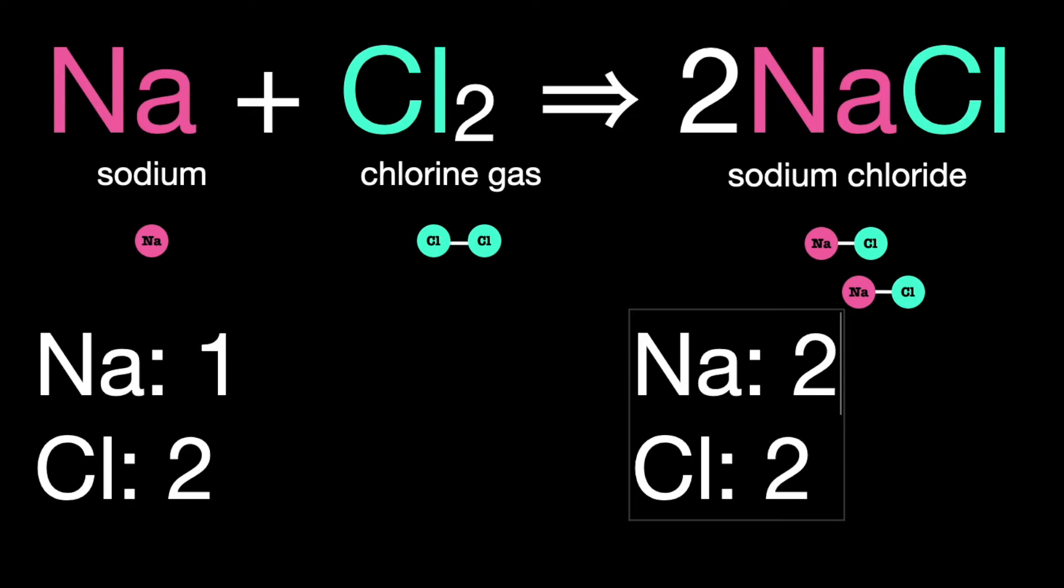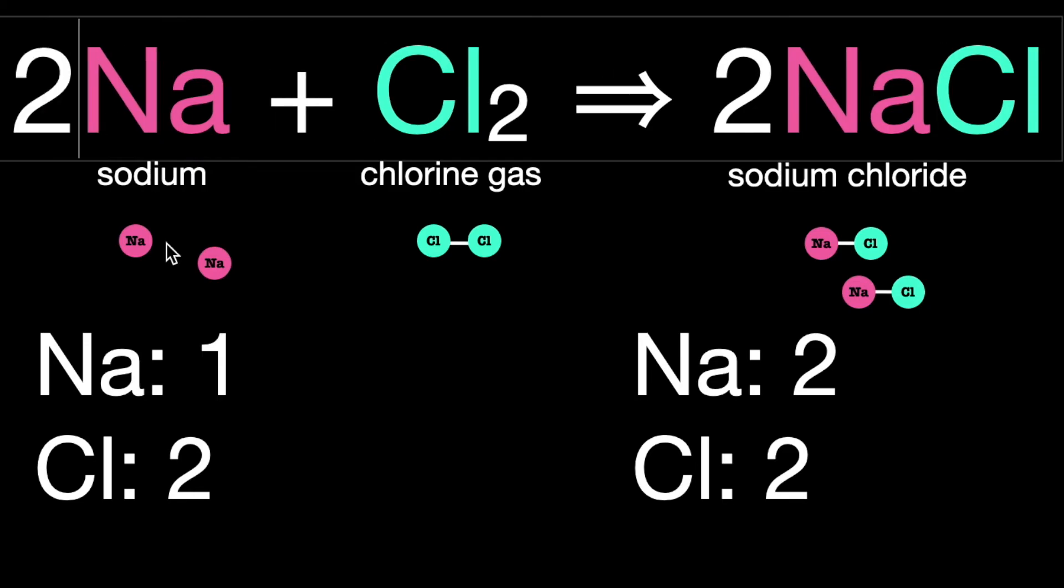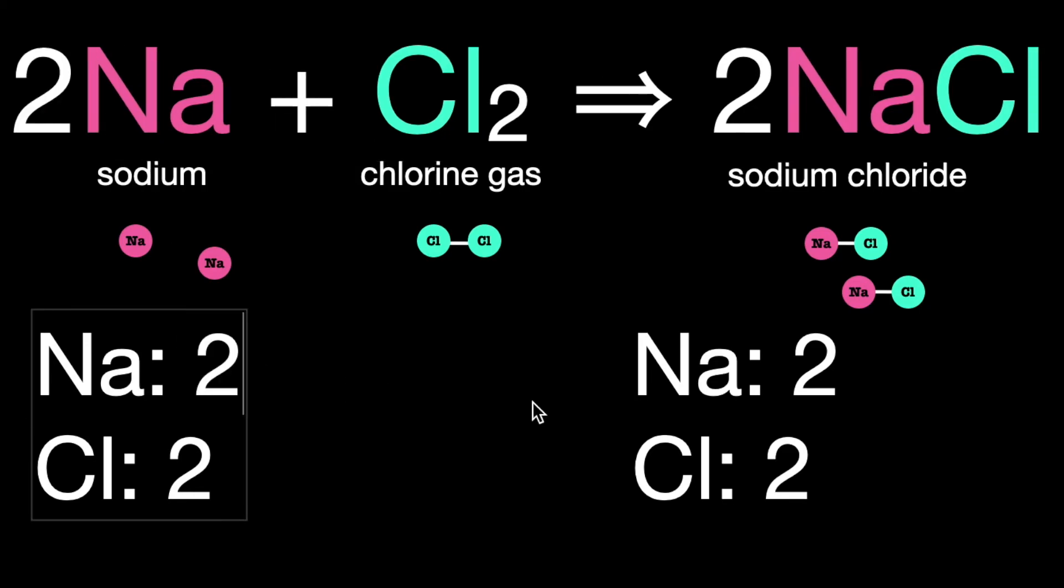which means we're still unbalanced. But very easily on this side, we have a lone sodium atom coming in. Why don't we just pop that up to two? And it only doubles the Na. The Cl2 is unaffected.